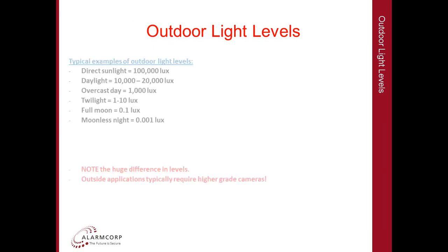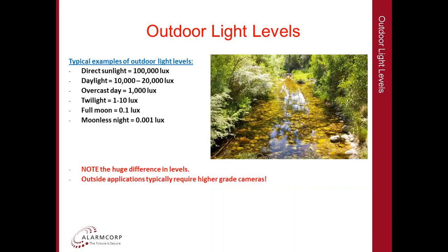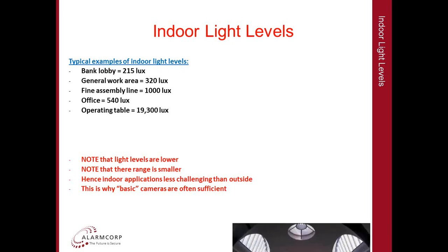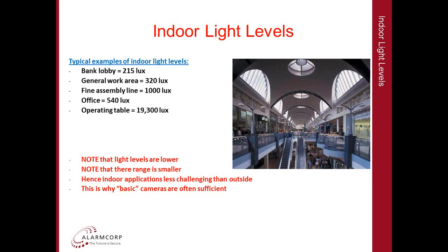Outdoor light levels vary all the way from 100,000 lux in full sunlight down to about 0.001 lux on a moonless night. Key takeaway: there is a huge difference in levels, so outside applications will typically require higher grade cameras capable of handling this massive difference in illumination. Indoor light levels are typically a lot lower — a few hundred lux — and there is a lot less variation in the illumination level. This is why in many indoor applications you can get by with fairly basic cameras, such as plastic dome cameras that do not have highly specified sensors or DSPs, because the lighting conditions are not as challenging.